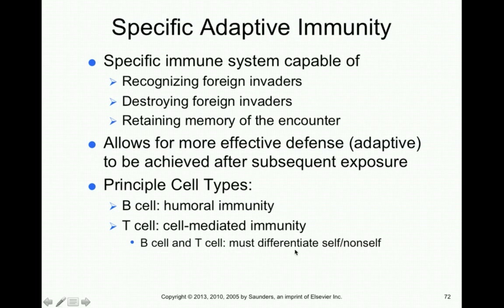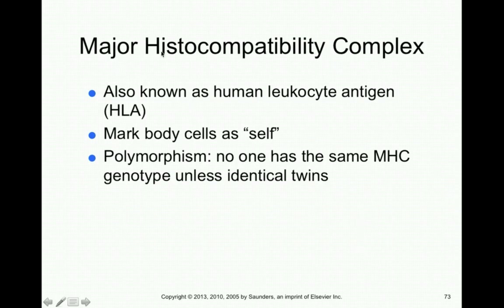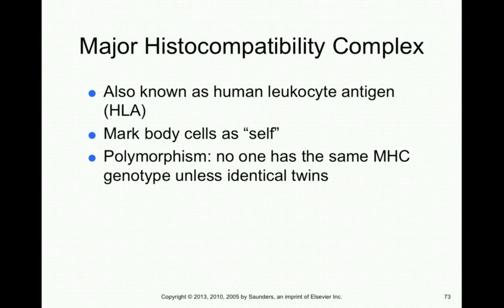B and T cells accomplish self/non-self recognition through the major histocompatibility complex (MHC), also called the human leukocyte antigen or HLA. Each individual person has their own HLA markers that label their body's cells as self. These individual and unique HLA markers are dependent on your genotype. Everyone on the planet — unless they're identical twins — has their own unique HLA, which marks their body's cells as self.